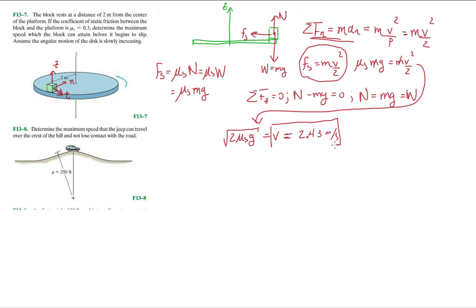The maximum velocity of this disc spinning would be 2.43 meters per second. That's it. This problem's pretty quick, these are pretty good warming problems. The next one's going to be F13.8. Let's determine the maximum speed that the jeep can travel over the crest of the hill and not lose contact with the road.